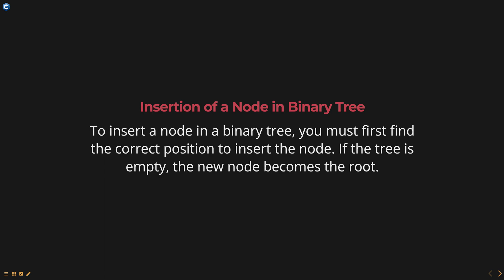If the tree is not empty, we start from the root and compare the values of the node to be inserted with the value of the root. If the value of the node to be inserted is less than the value of the root, we move to the left subtree. If the left subtree is empty, we insert the node there. If the left subtree is not empty, we repeat the process until we find an empty position to insert the node.